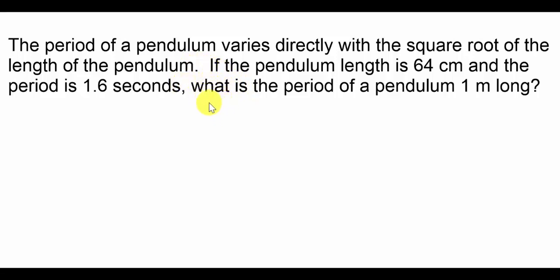You can see in this problem this is a two-situation case. The period of the pendulum varies directly with the square root of the length of the pendulum. If the pendulum length is 64 centimeters and the period is 1.6 seconds, that's the first situation. What's the period of a pendulum that's one meter long? That's a second situation.